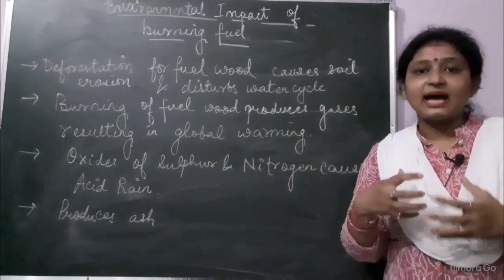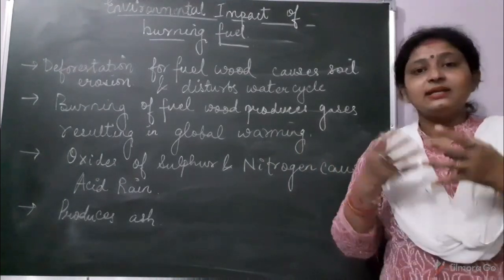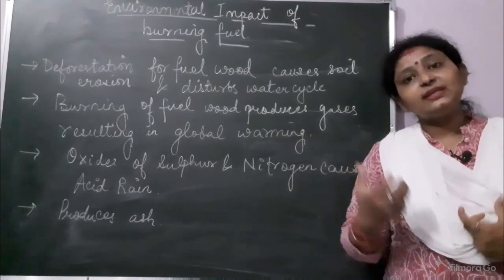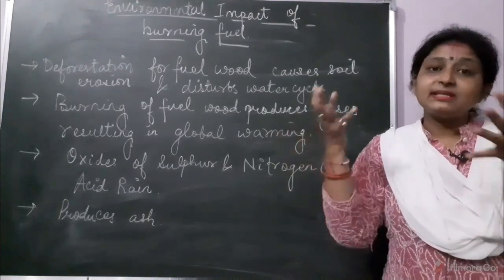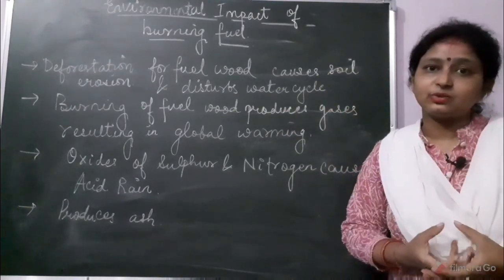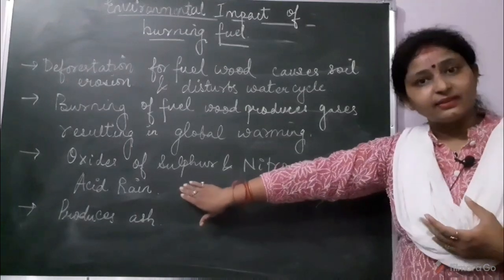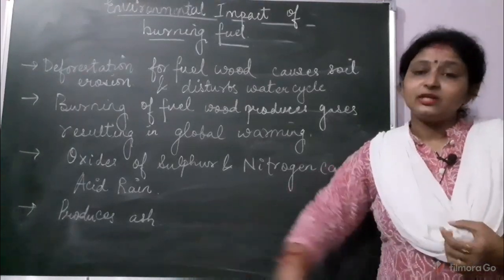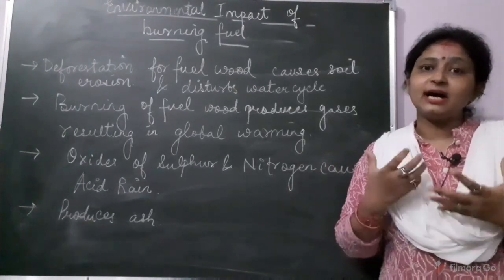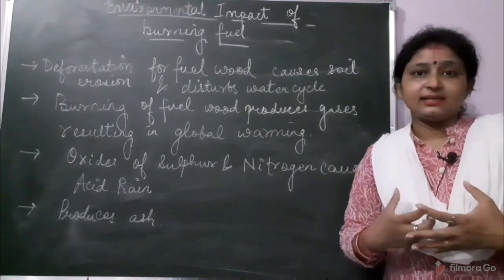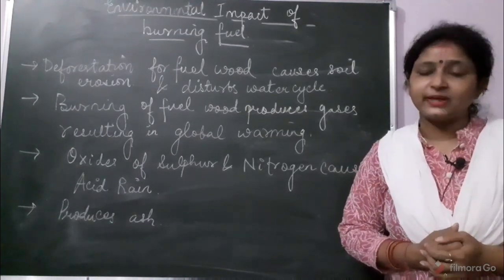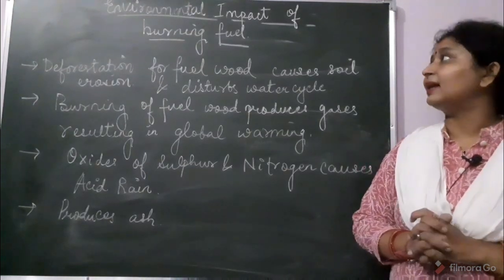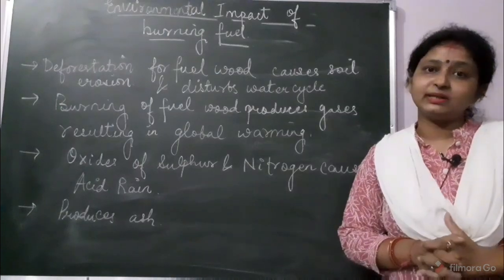These sulfur and nitrogen oxides cause acid rain. When these oxides react with water, they form mild acids, and when it rains, the acid content is present in the rain — that is why we call it acid rain. Also when we burn fuel, ash is produced, which is very harmful for human beings and other living organisms. So in this video we have talked about air pollution, its causes, and the environmental impact of burning fuel.